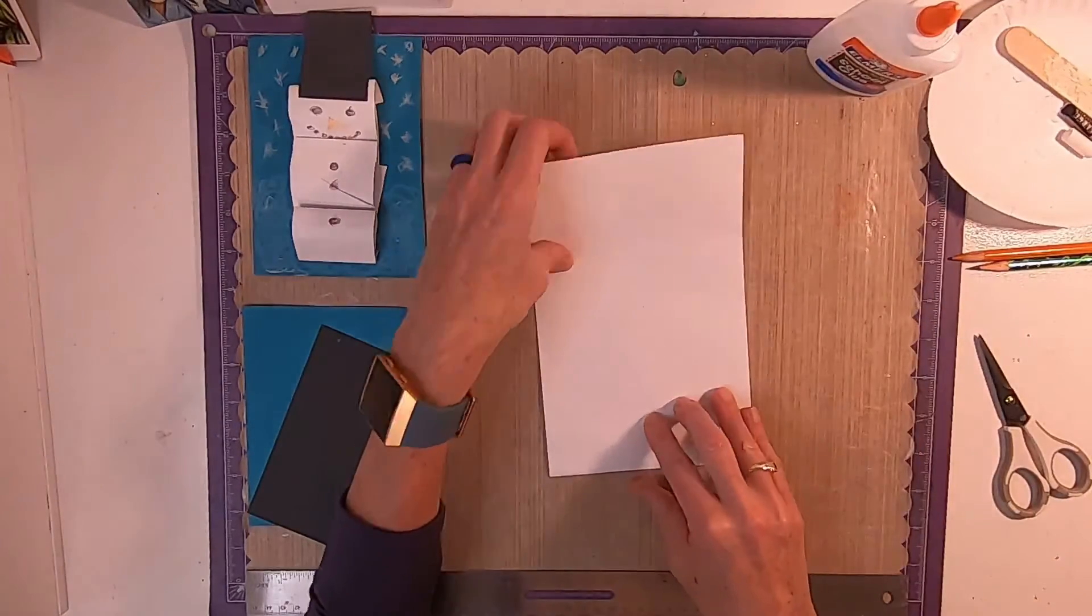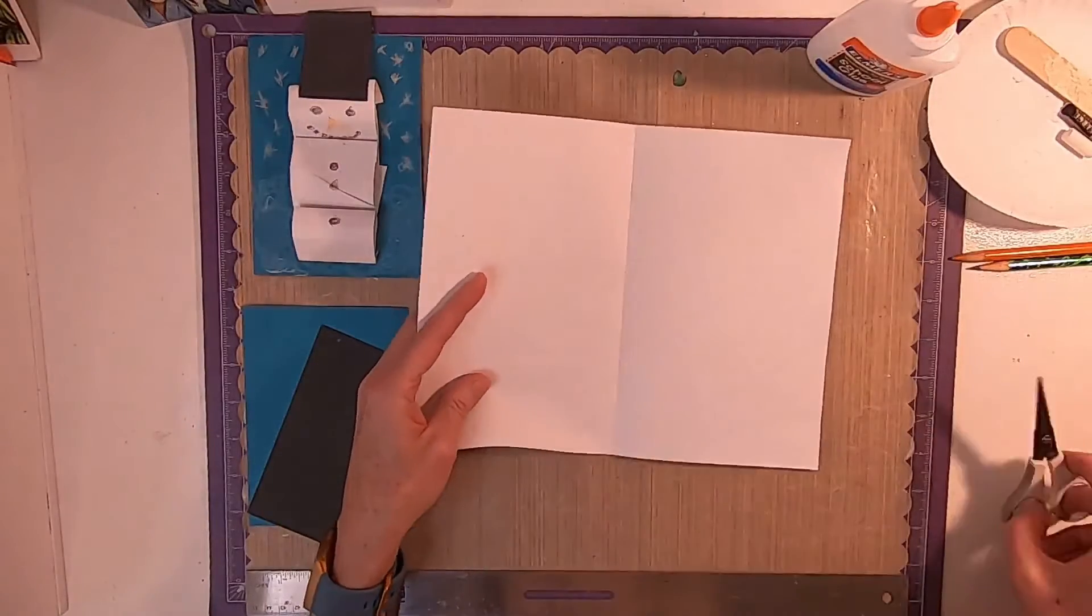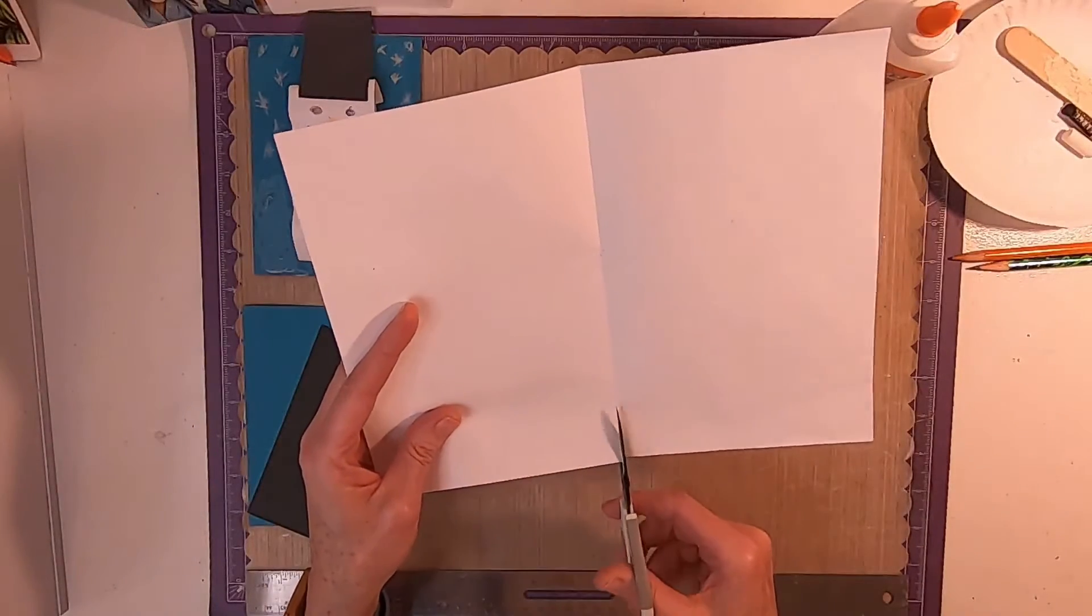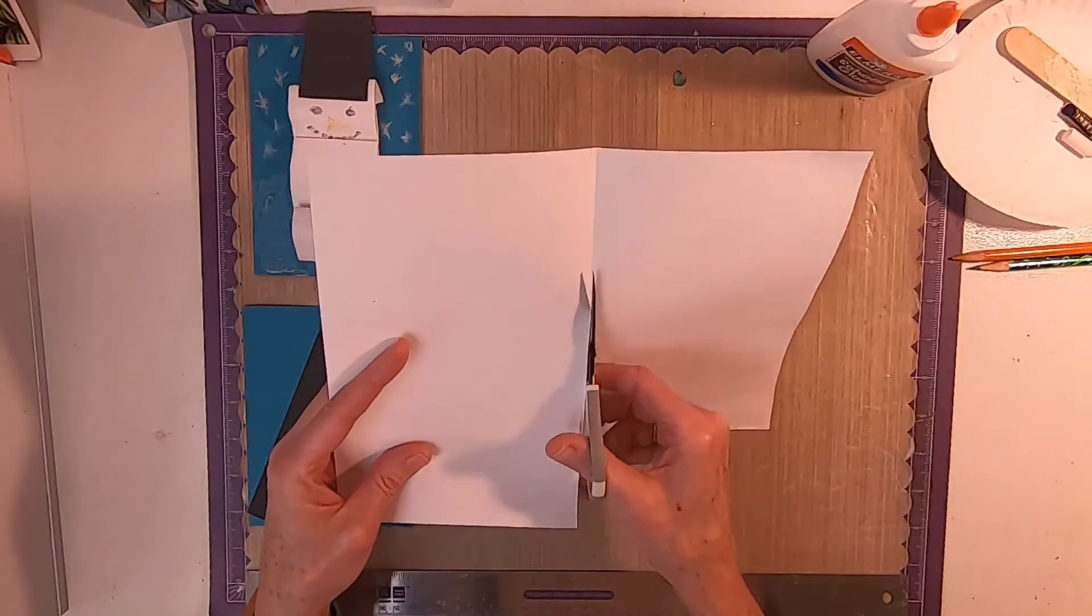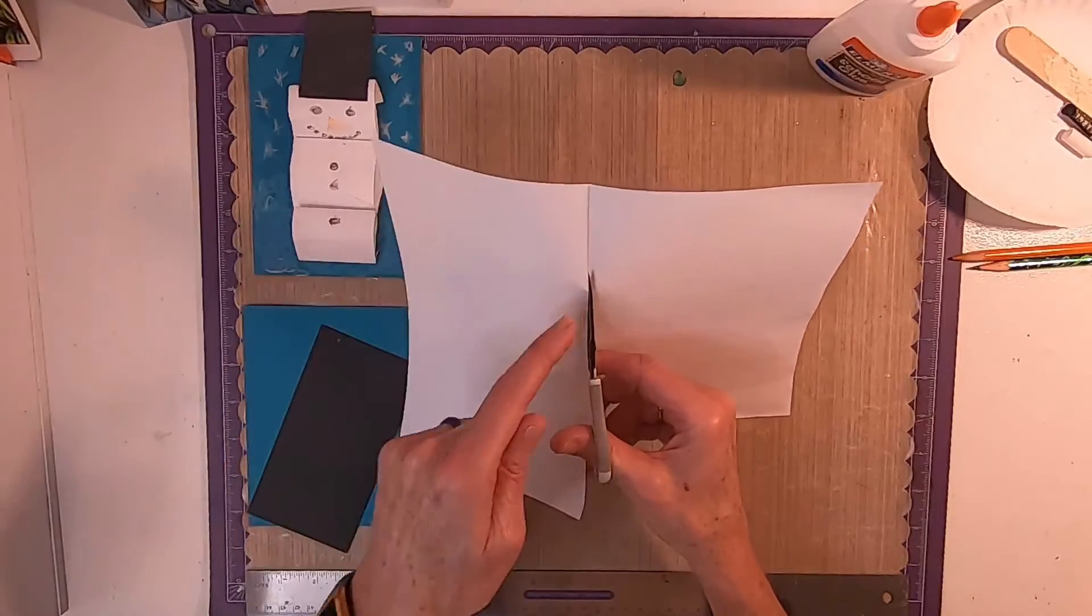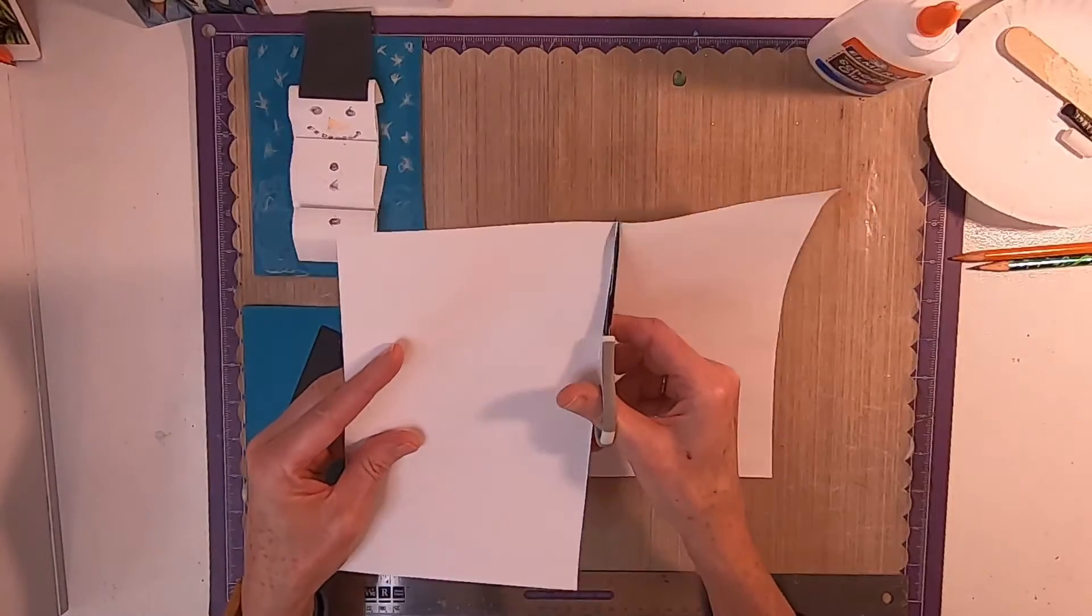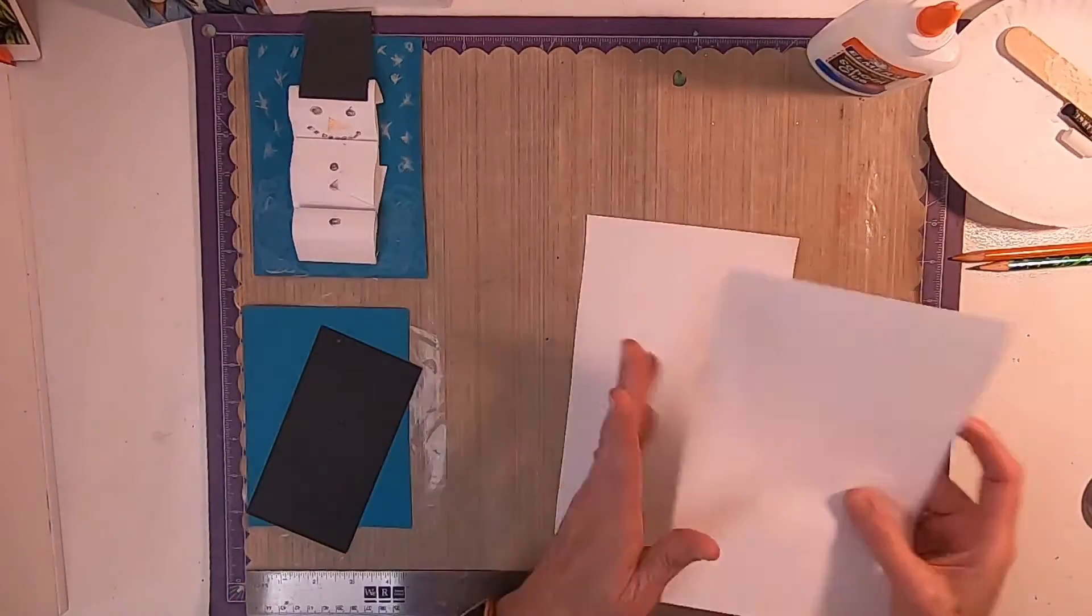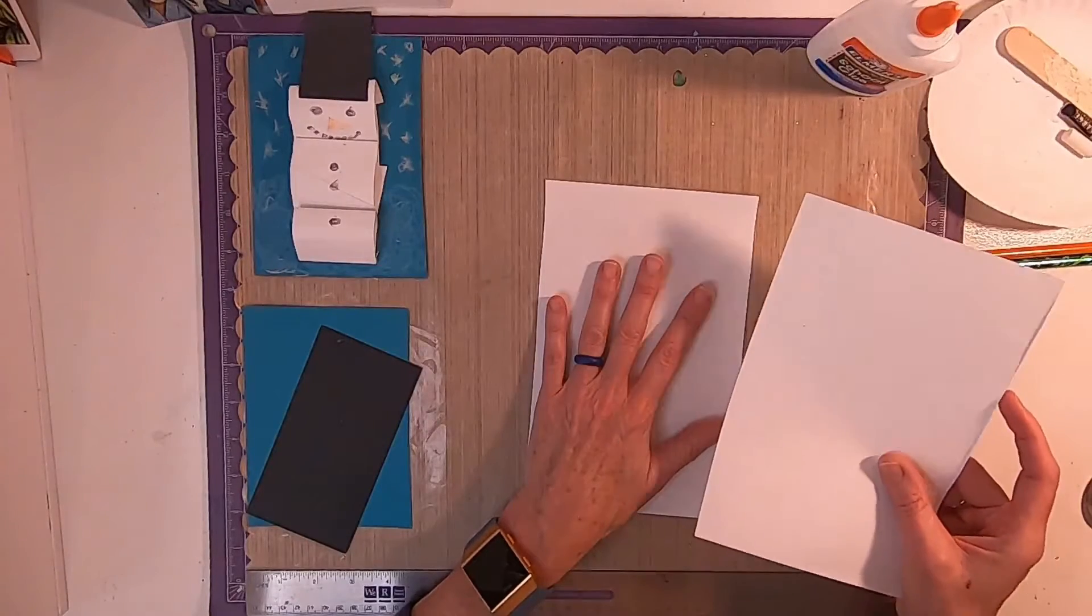Then what we want to do, open it back up, cut along that line. Cut away from you. Then you can see where you're cutting. We only need one, so let's put the other piece off to the side.